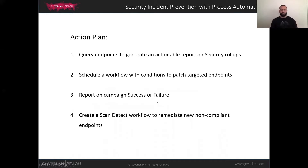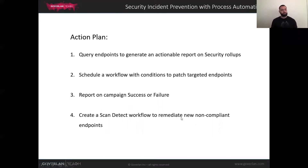Now, here's the action plan for today. The first process automation we're going to create is a very simple query against your endpoints to figure out what machines have Windows updates available. From there, we're going to go ahead and create a more detailed action that's going to give us a specific report on what updates are currently installed.